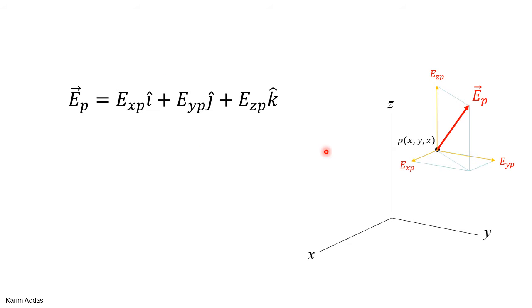So if you go to any point in space, the electric field vector consists of an x component, Exp at point p, Eyp, Ezp. It has three components: x, y, and z components. So if I want to get the electric field at a point in space, I need to get Ex, I need to get Ey, I need to get Ez.